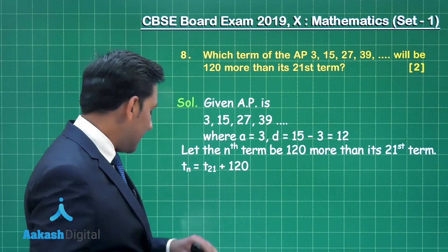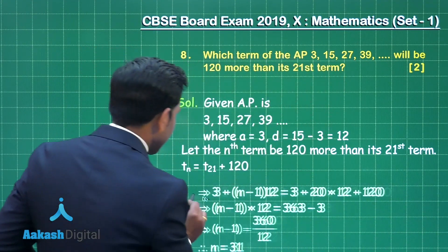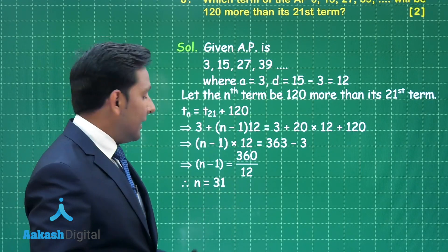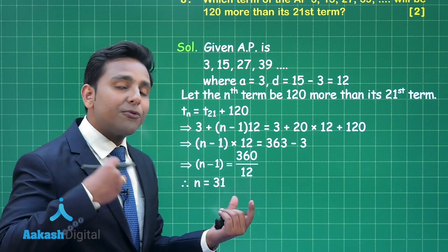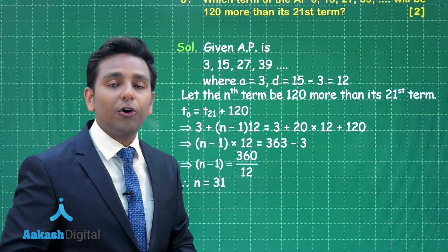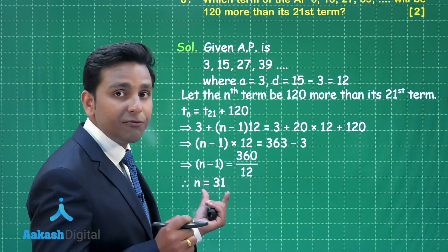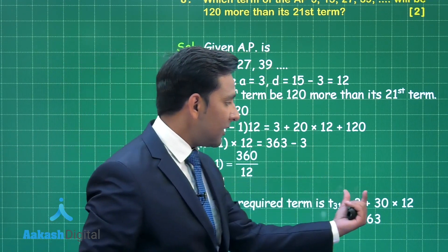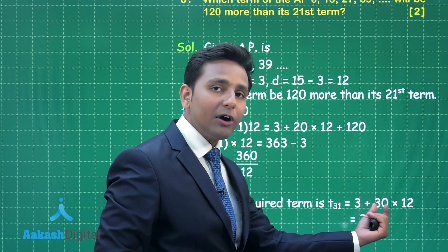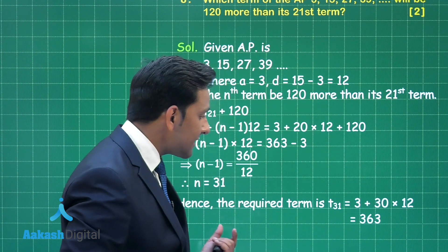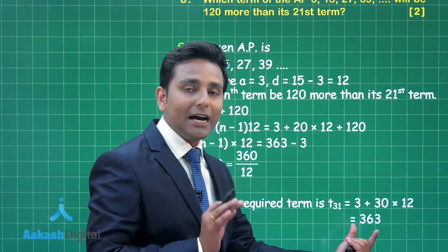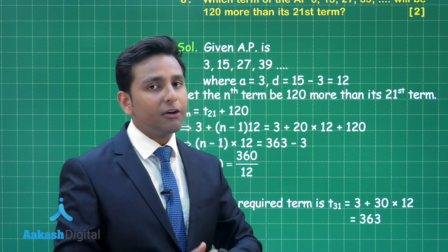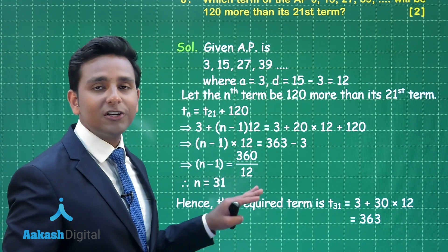After calculation, we obtain the value of n as 31. So the 31st term is 120 more than the 21st term of the given arithmetic progression. Now let us find the value of this 31st term using the formula a plus (n minus 1) into d — that means 3 plus (31 minus 1) into 12. After further simplification, the final answer is 363, which is 120 more than the 21st term.